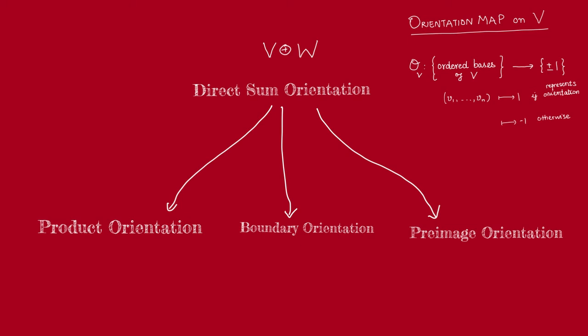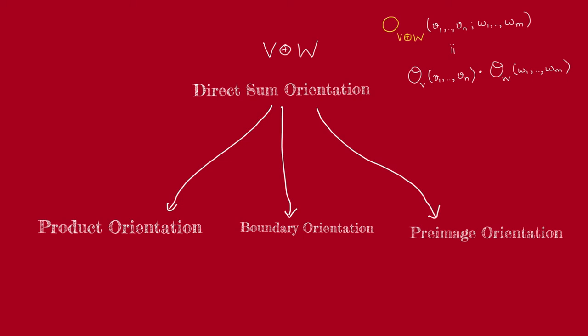So now, when we talk about constructing an orientation, what we're really going to talk about is constructing an orientation map. For example, on the direct sum of V with W, we can define an orientation as follows. Also, observe that for finite dimensional vector spaces, direct products are the same thing as direct sums. So we can also use the same formula to define an orientation on the direct product.